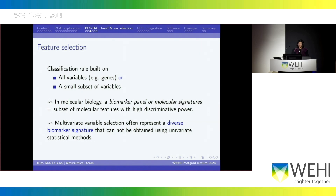You can build those classifiers based on all the variables you have — so all genes — or you can do variable selection, because not all genes will tell you what's happening in your biological system. You really want to identify only a subset of those genes. I'll refer to either a biomarker panel or a molecular signature when we talk about variable selection.